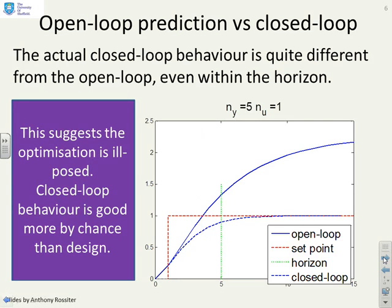Now what I've plotted in this one is the actual closed loop behavior, not the prediction. And what you'll notice is the actual closed loop behavior is quite different from the predicted behavior. And again, you'll notice what we said in the previous video. If the closed loop behavior is not close to the predictions, then your optimization is ill-posed. And if you get good closed loop behavior, it's by chance, not by design, because the optimum prediction you've given is not close to what's actually happened.